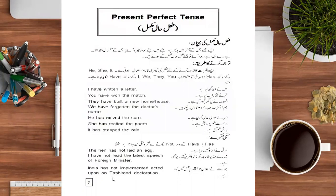India has not implemented such a declaration. The same is the case with interrogative sentences — we bring the helping verb to the start. For example: Have I written a letter? Have you won the match? Have they built a new home? Have we forgotten the doctor's name? We simply bring the helping verb to the start, then the subject, then the third form of the verb, then the object.